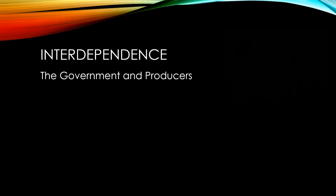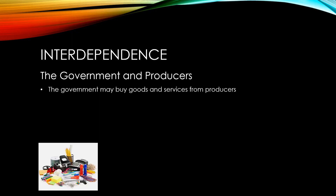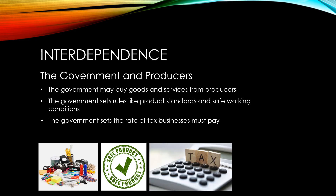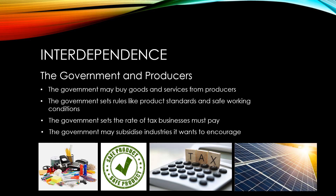Next, let's look at the relationship between government and producers. The government may be a customer of producers, buying the goods and services that they produce. The government also sets rules like product standards and safe working conditions. The government sets the rate of tax businesses must pay, and the government might subsidise industries that it wants to encourage, such as renewable energies.